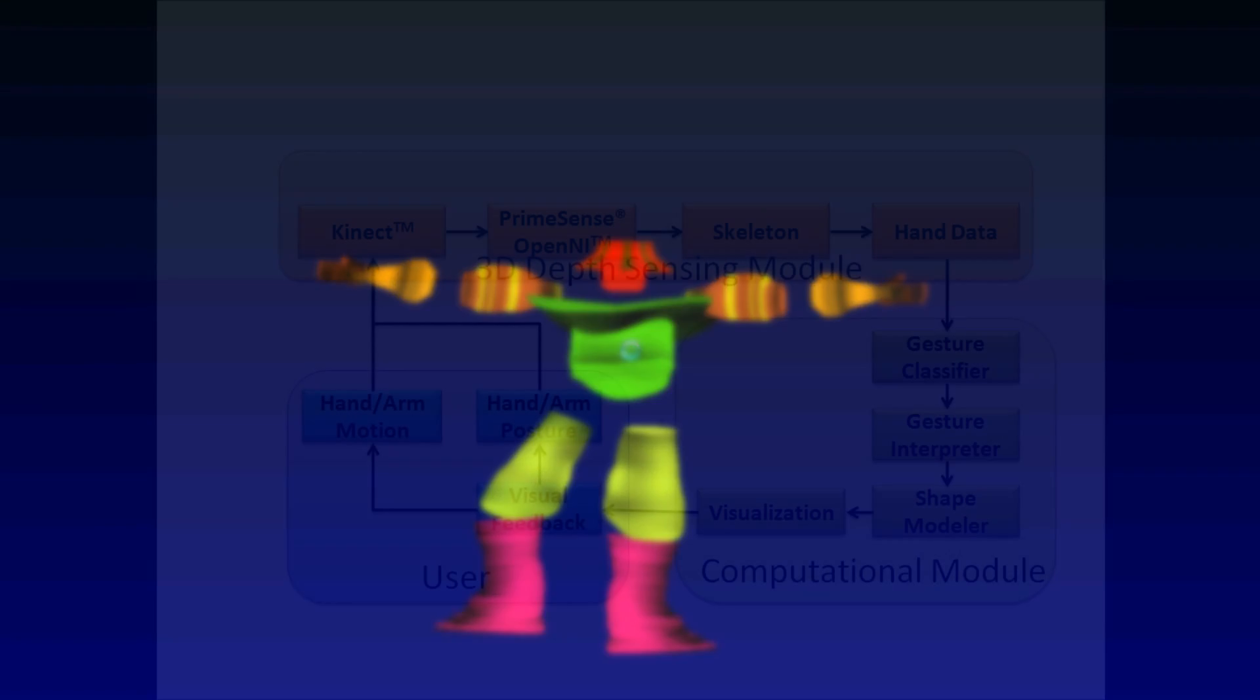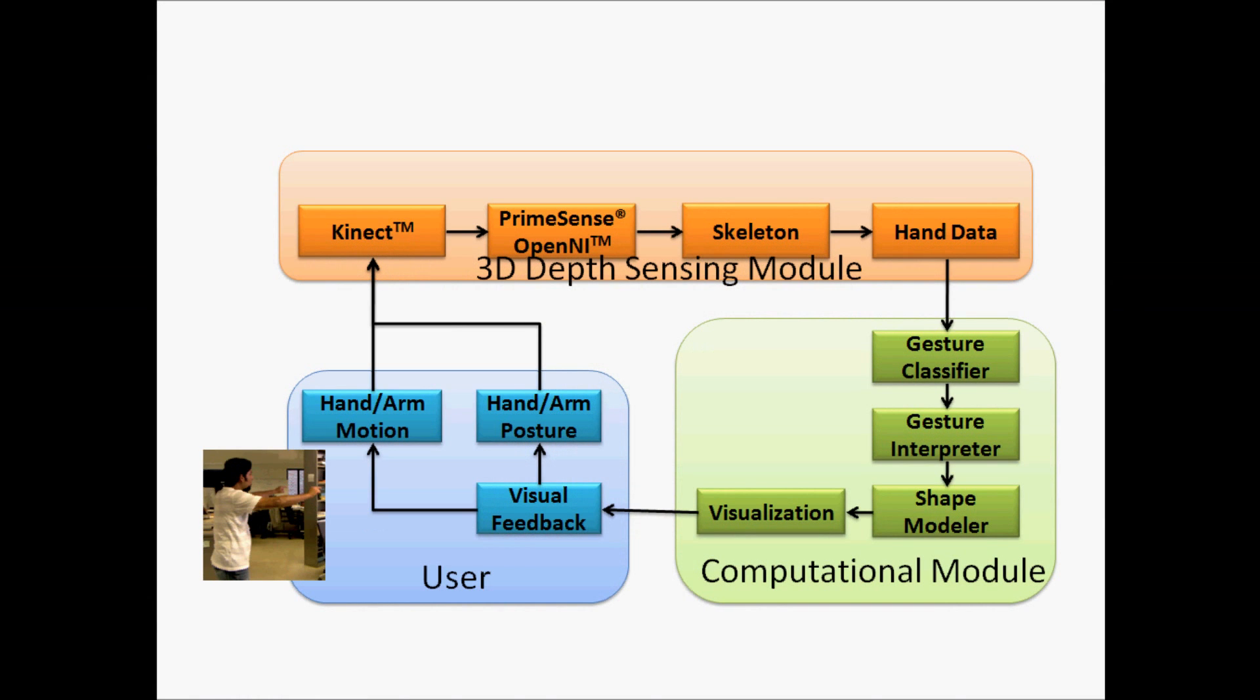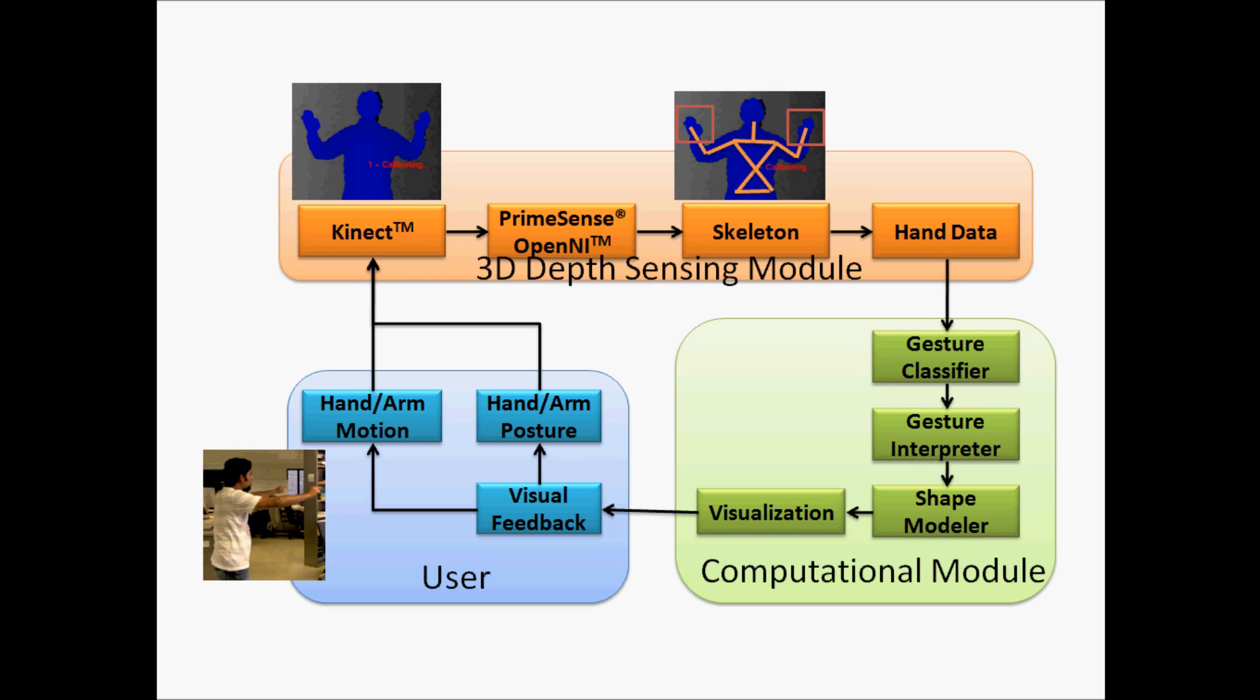Our setup consists of a screen, a computer, and an off-the-shelf Microsoft Kinect camera. Our system works by determining the posture of the hands identified by tracking skeletal joints of the user.